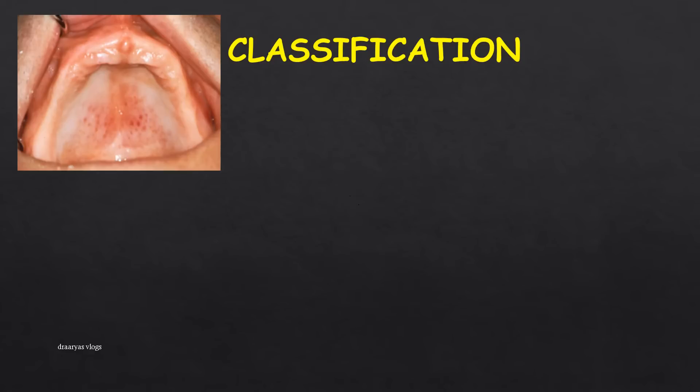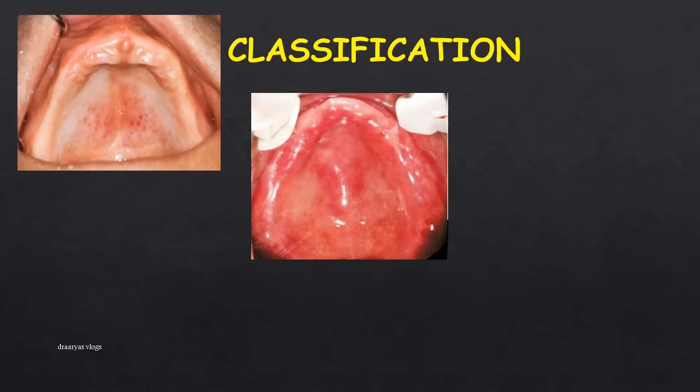In 1962, denture dermatitis was classified into three types by Newton. Type 1 denture dermatitis: a localized simple inflammation or pinpoint hyperemia is a characteristic feature. Type 2: a more generalized erythematous area involving either a portion of or the entire surface of the denture-covered mucosa — erythema of the entire mucosa in contact with the denture surface is characteristic of Type 2.